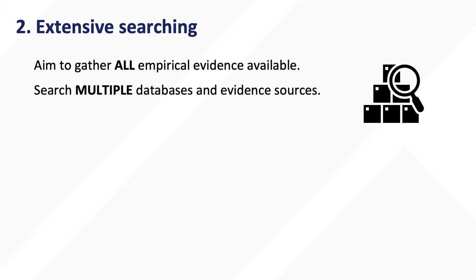Extensive searching. In a systematic review, we aim to gather all empirical evidence available on the topic and to minimize publication and reporting bias. You will need to search multiple databases and evidence sources to collect all relevant information, such as PubMed and Embase.